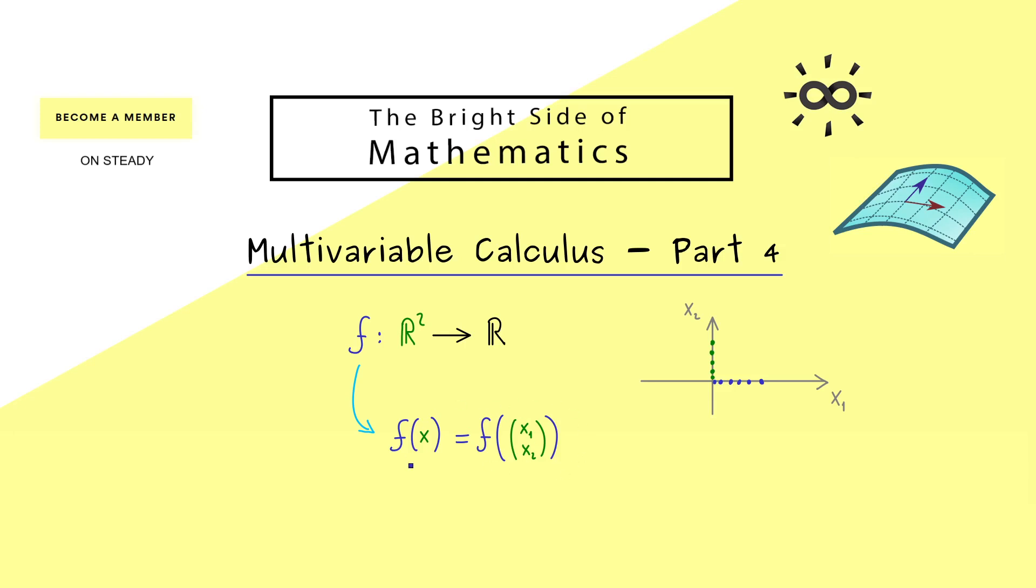So obviously this is the same thing, but here we explicitly write the components. However, most of the time it's not very suitable to write it in this column form, and therefore we have another notation as well. There we just put the components as independent variables into the function. Okay, so formally you see some differences here, but in the end they all represent the same function. And then just depending on the problem, we choose the most suitable one.